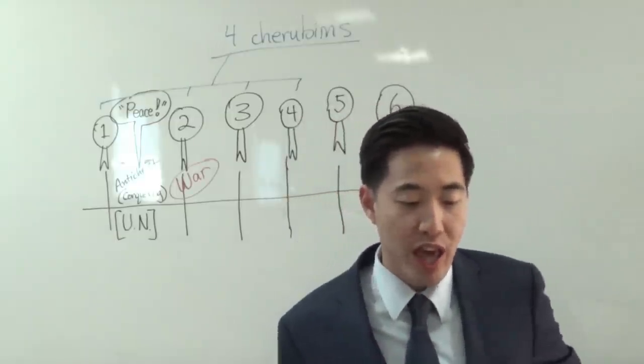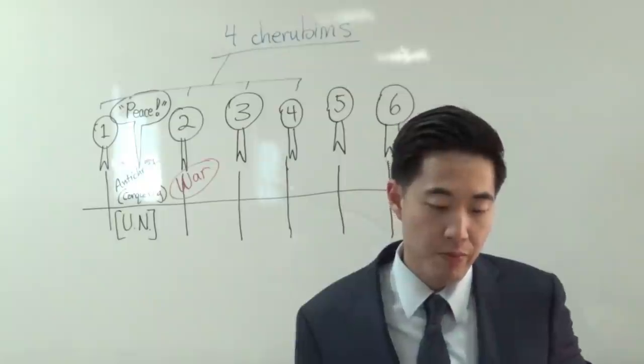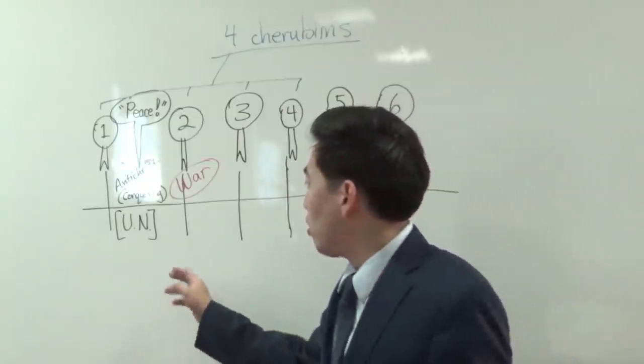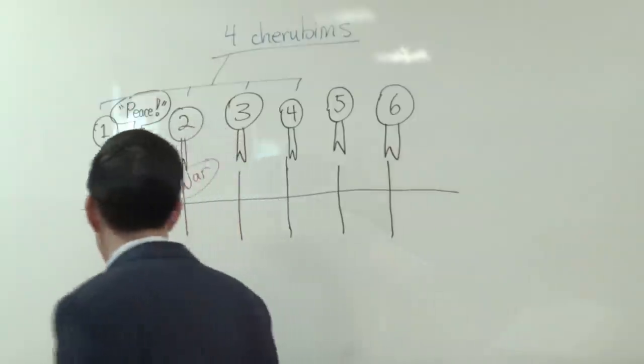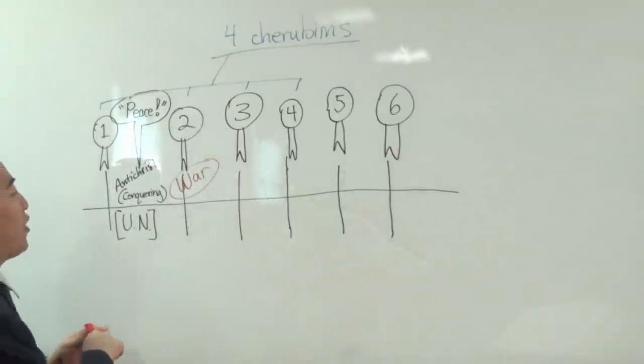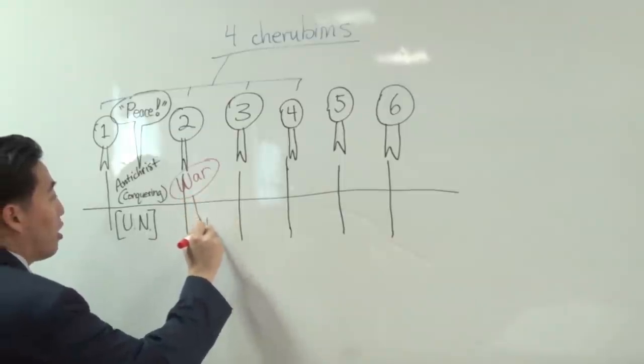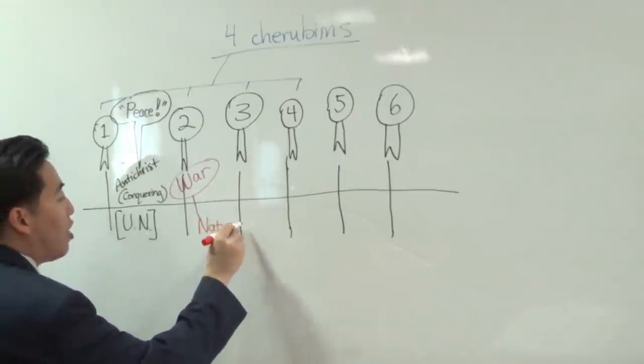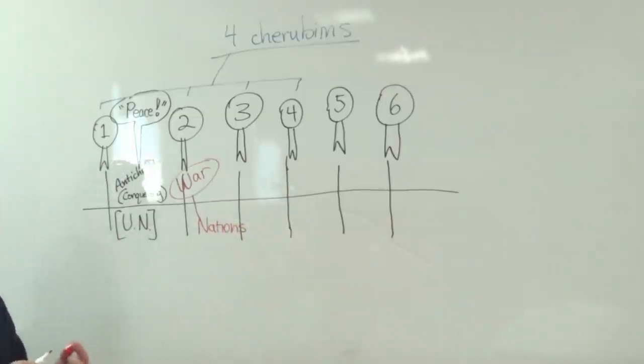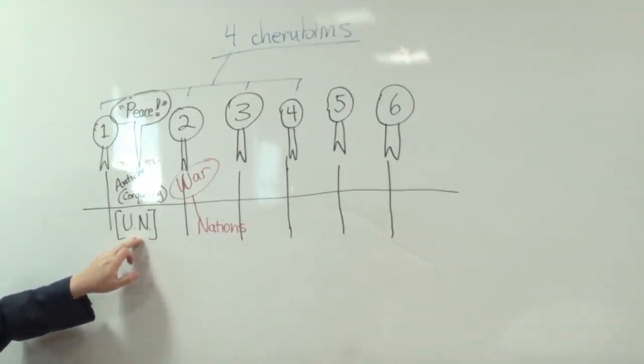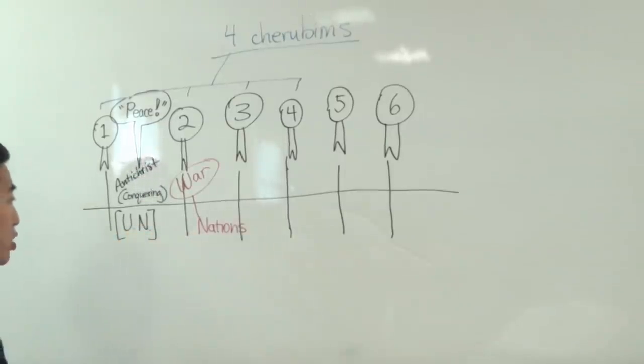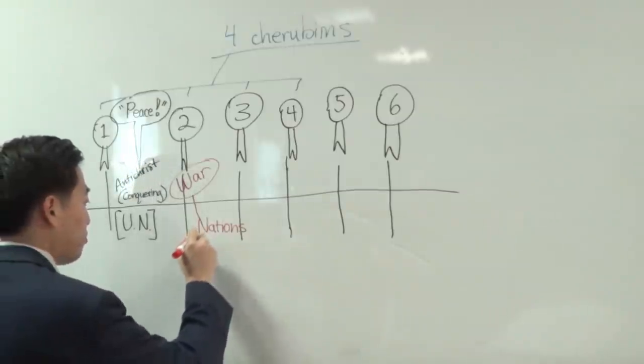Verse 4, and there went out another horse that was, notice the color, red. Think about the nations, so let's use our heads here. Think about nations that currently conflict with the United Nations today. Think about that. Here's another thing to think about. Think about the nations whose favorite color is red. It's a no-brainer then, right? You don't have to be a scholar. I don't even have to tell you. If you're going to think about nations that's going to resist, not agree with the Antichrist-united nations, and their color is red, it's a no-brainer right here. It's communism. It's a communist.